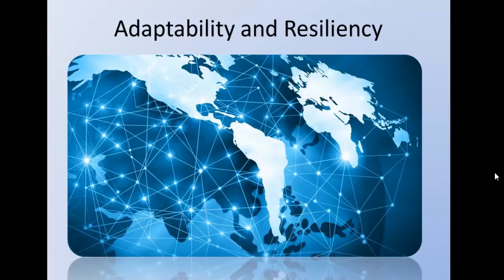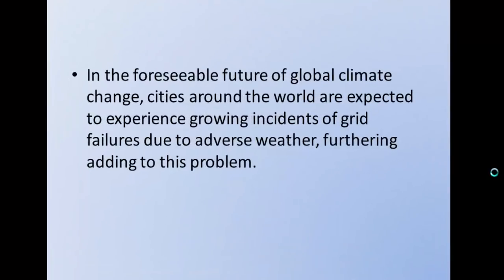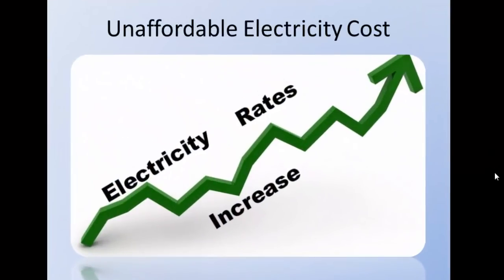Natural or human-induced accidents are a growing concern. Regarding adaptability and resiliency: in 2018, more than 10,000 homes in Australia's second most populous state were left without power due to a surge in power demand from scorching heat that overloaded the grid. In the foreseeable future of global climate change, people and cities around the world are expected to experience growing incidents of grid failures due to adverse weather.